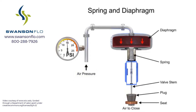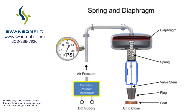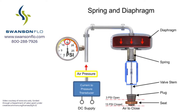With no air pressure, the restrictor is pushed upward by the spring to act as a normally open control valve. To vary the position of the restrictor and flow through the valve, a current to pressure transducer can be used to provide a 3 to 15 PSI signal to the diaphragm. At 3 PSI the valve is maintained open, and at 15 PSI the valve is maintained closed.